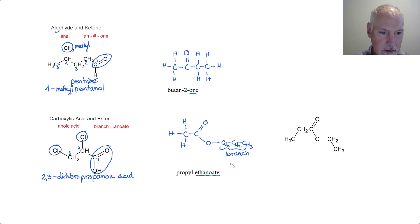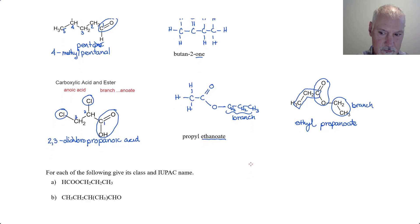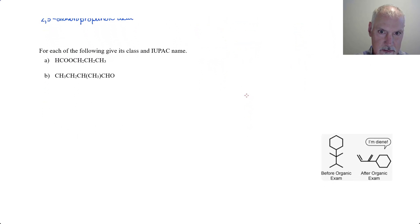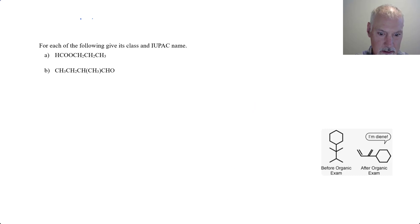I want to do one more of these just because they are a bit tricky. So again, I'm going to identify my carboxyl functional group. And it is part of this chain. So this part, three carbon chain, is going to become propanoate. And that is the branch that's attached to it. So this would be called ethyl propanoate.